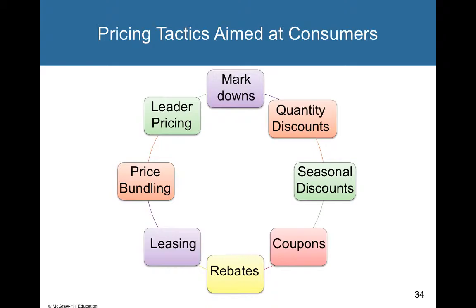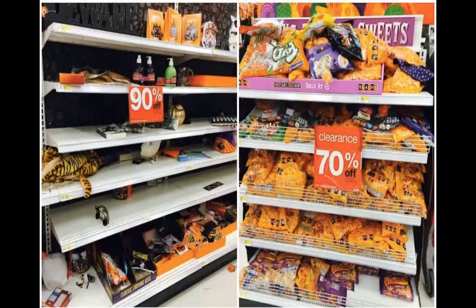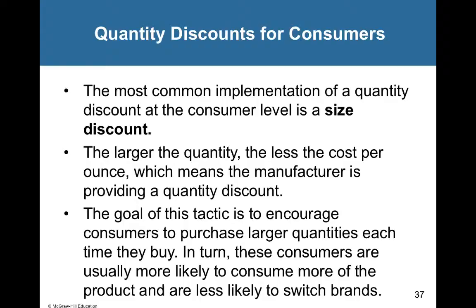These are the pricing tactics aimed at consumers. Starting with markdowns — these are basic reductions retailers take off the initial selling price of a product or service. Markdowns are used to increase sales and traffic, typically to get rid of slower-moving or obsolete merchandise, or seasonal items after the season has passed. For example, Halloween candy goes on markdown right after Halloween — I always look for discounted Reese's Cups at Easter and Christmas.